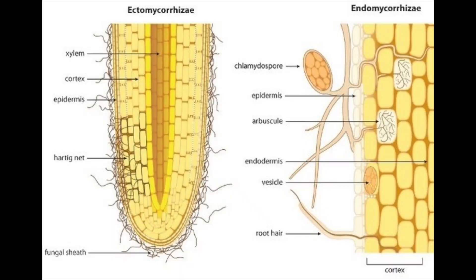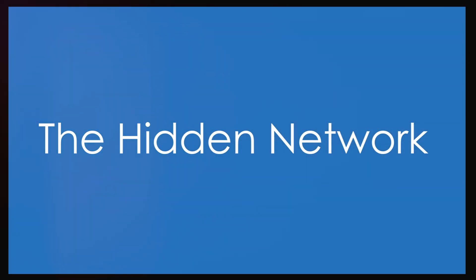There are two main types of mycorrhizae: ectomycorrhizae, where the fungus envelops the root in a sheath, and arbuscular mycorrhizae, where the fungus penetrates the root cells.